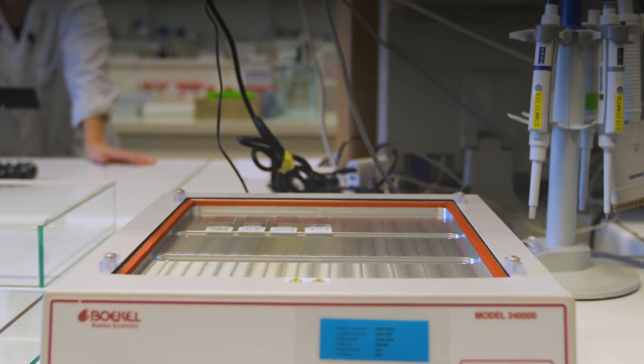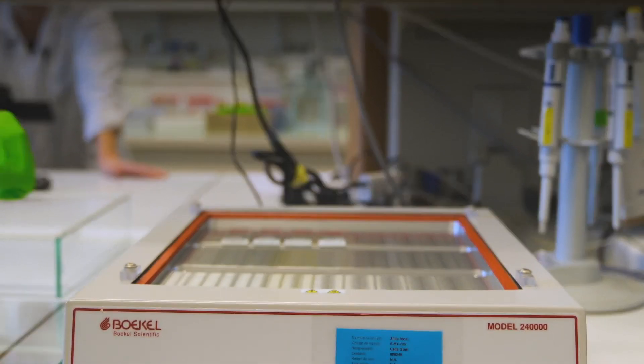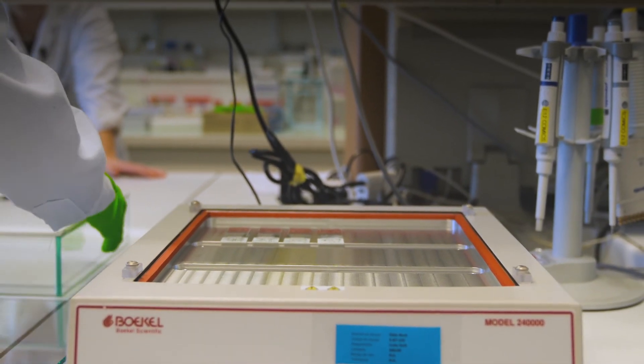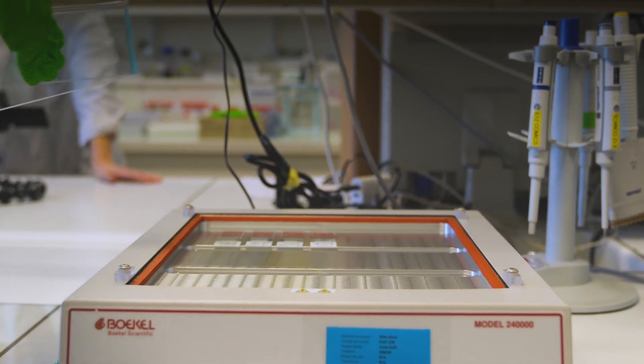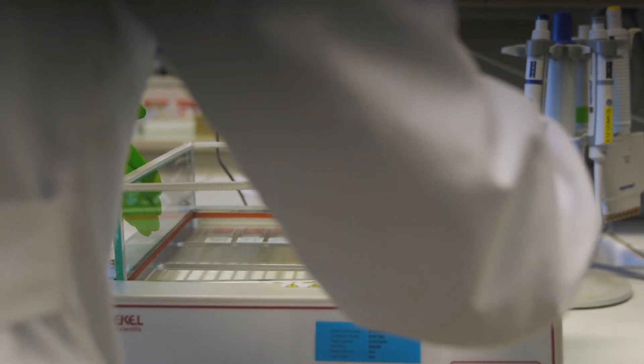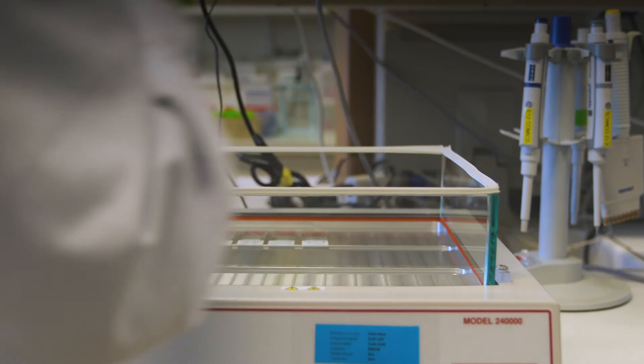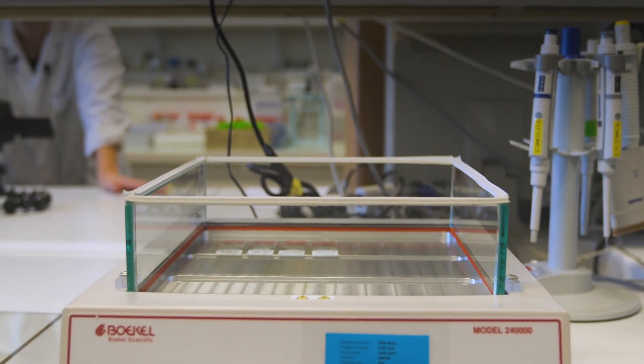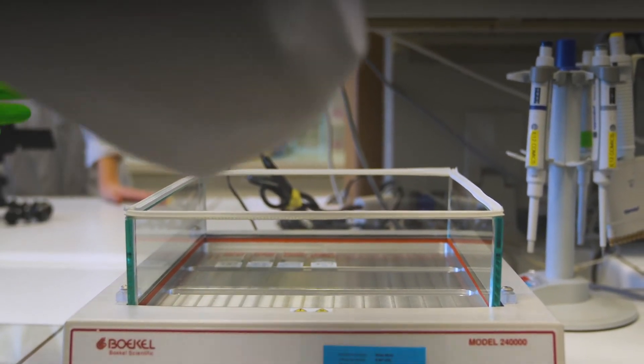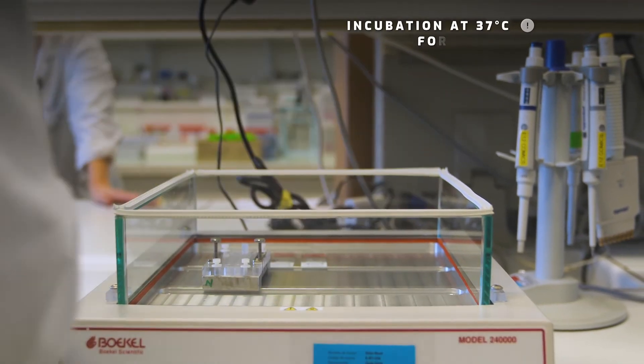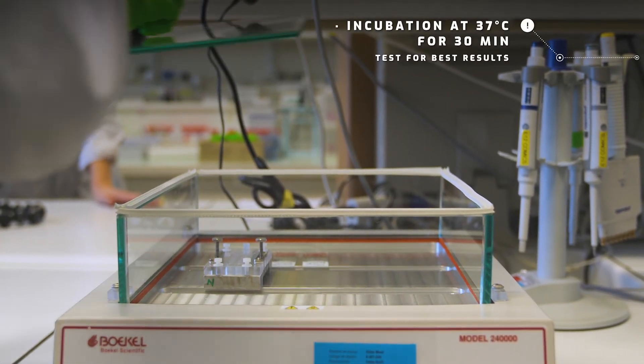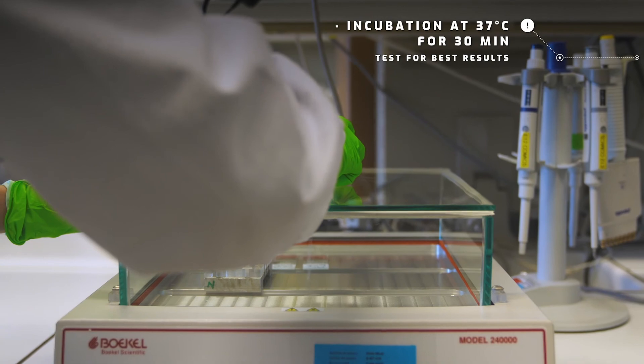If you want to work with 12 gel systems, what you can do is make an intersection, like a way to increase the height. Then you can put the 12 gel incubation chamber also in there and incubate everything at 37 degrees.